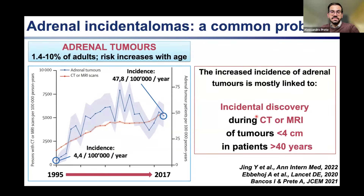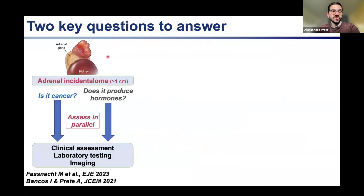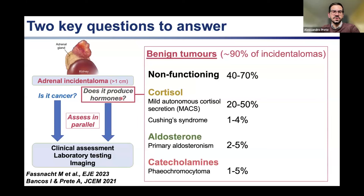These tumors are very common — around 1.4% of adults are found to have an adrenal tumor, and the older we are, the more likely we are to be diagnosed with one. Over the last two decades there has been a huge rise in the incidental discovery of adrenal tumors, with most discovered during cross-sectional imaging of the abdomen. Most tumors are small and mostly diagnosed in patients over the age of 40. Whenever we pick up an adrenal mass, there are two key questions: is it cancerous, and is it producing hormones in excess? Both should be assessed in parallel using clinical assessments, laboratory testing, and available imaging.